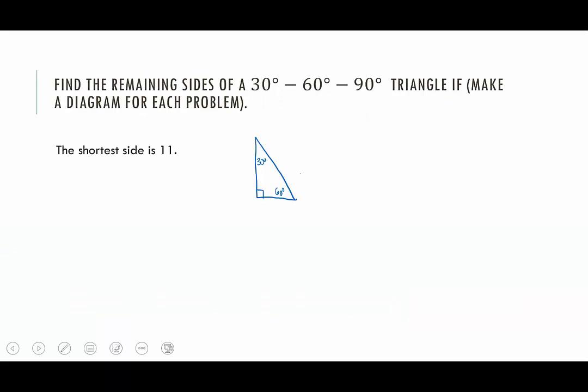Let's look at an example. In this example, we know that the shortest side is 11. When we have a 30-60-90 triangle, and in fact when we have any triangle, there is a property that says the shortest side is always opposite the least angle measure. The least angle measure of a 30-60-90 triangle is 30 degrees, so that indicates that this leg is 11. This is the side that's opposite 30, so we want to remember the ratio 1, root 3, 2.